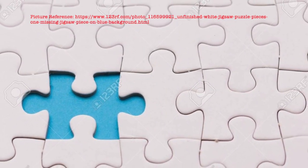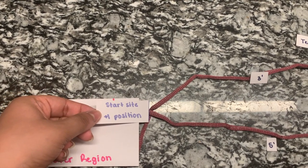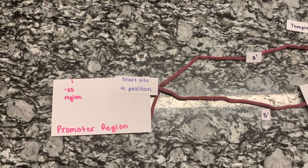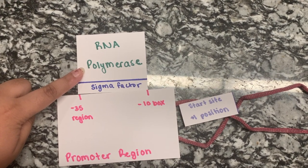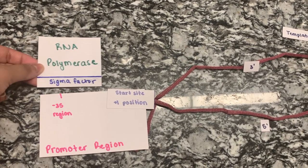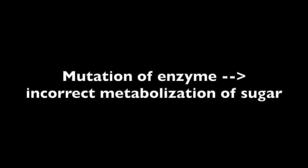What would happen if one of these puzzle pieces was missing? Let's take a look at an example. Say that the TATA box, located at the negative 10 box, is deleted in a gene that codes for an enzyme to metabolize sugar. What could be some possible consequences? Well, remember that the TATA box helps to position the RNA polymerase at the beginning of transcription. Therefore, if it was missing, the RNA polymerase would find it harder to locate the beginning of the gene that needs to be transcribed. This might stop the gene from being transcribed at all, leading to no enzymes that metabolize sugar, or it could result in a gene that is not transcribed in its entirety, leading to the formation of an enzyme that cannot correctly metabolize sugar. Both of these could have serious phenotypic consequences on the individual.